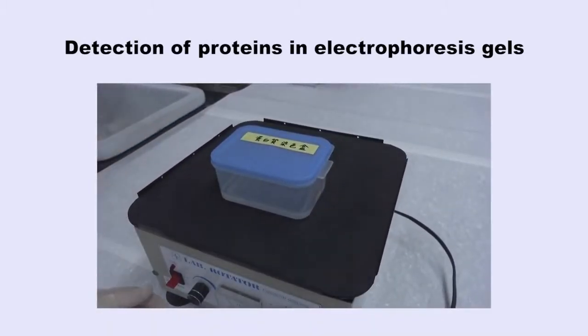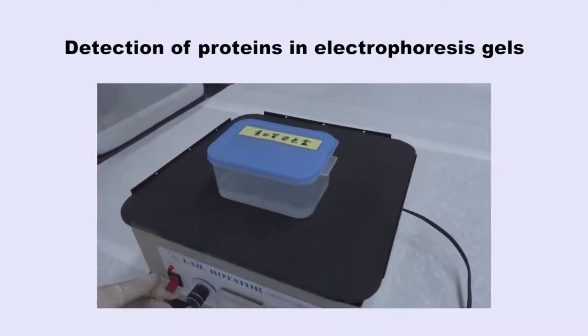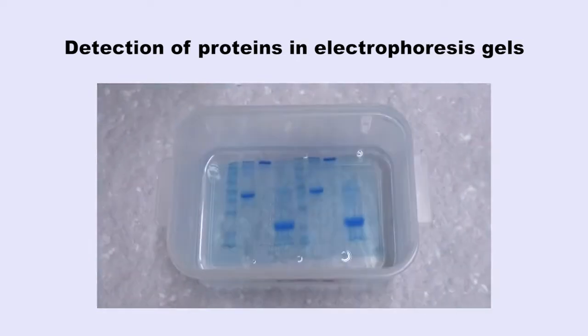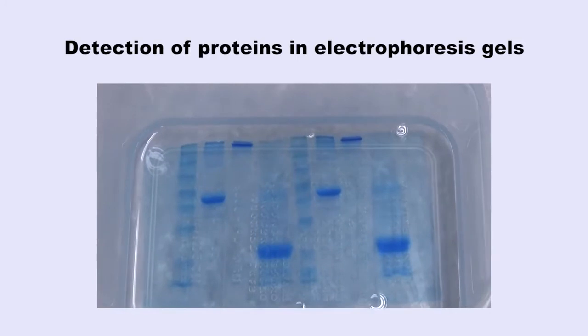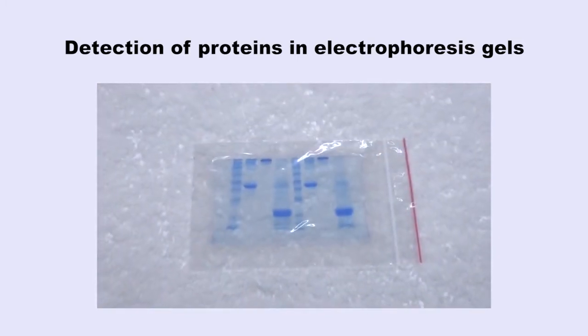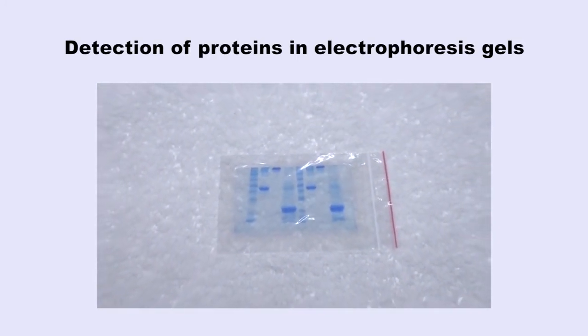Detection of Proteins in Electrophoresis Gels. A protein electrophoresis gel may be stained to reveal all protein bands. Alternatively, specific antibodies may be used to detect specific proteins.